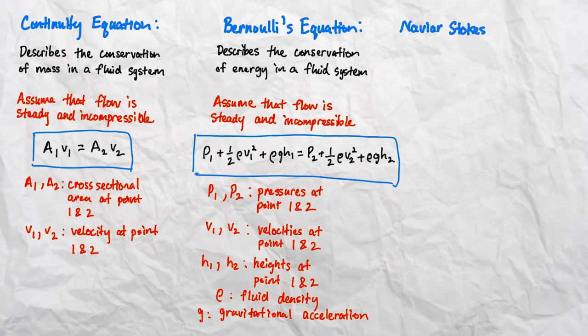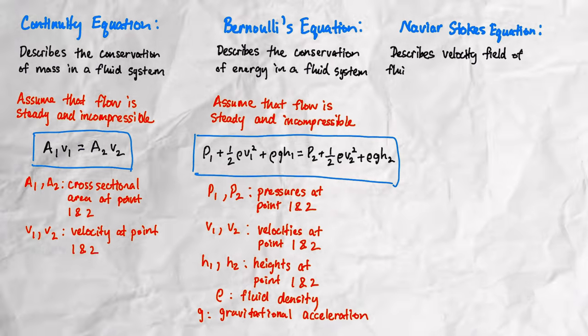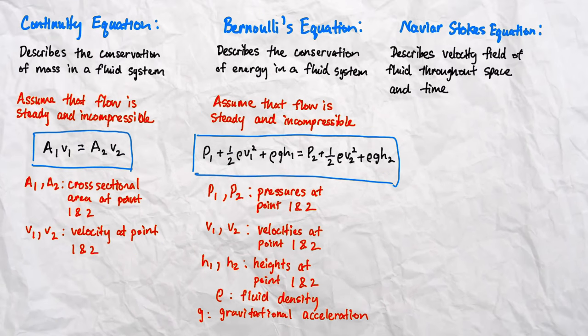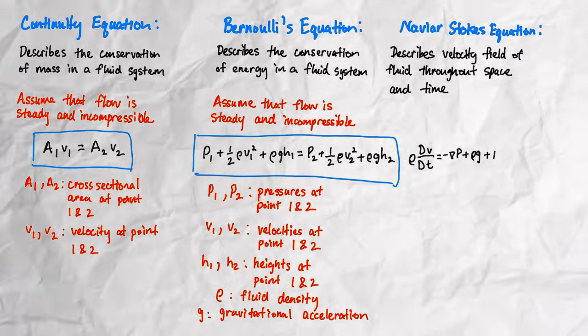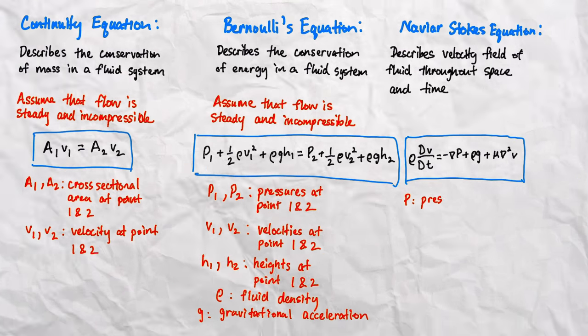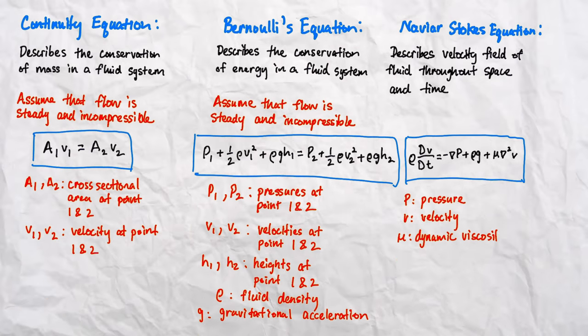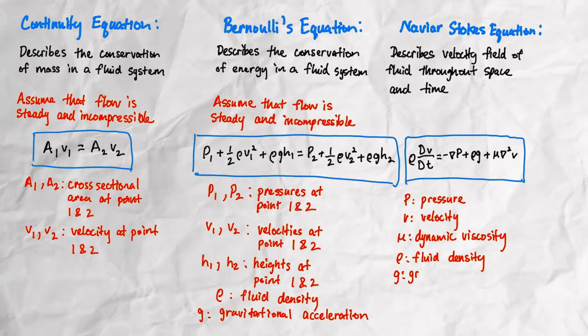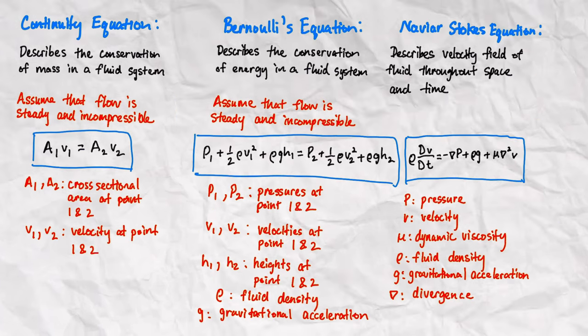Finally, we have the Navier-Stokes equation, which is a set of partial differential equations used to describe the velocity field in a fluid throughout space and time, and accounts for effects of pressure gradients, viscous forces, and gravitational forces. P is the pressure, V is the velocity, mu is the dynamic viscosity, rho is the fluid density, G is the gravitational acceleration, and inverted delta represents divergence, which just takes a vector field to produce a scalar quantity such as pressure or velocity.